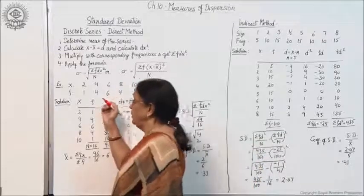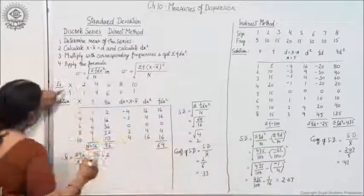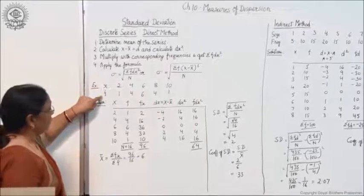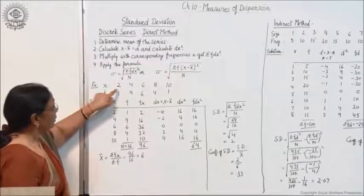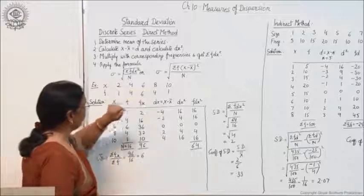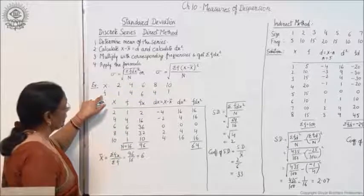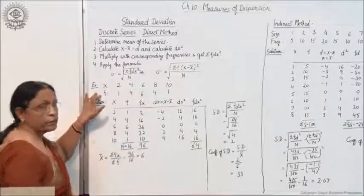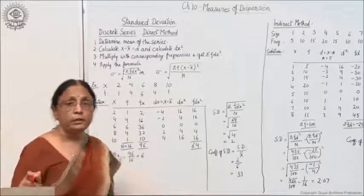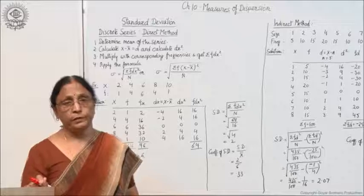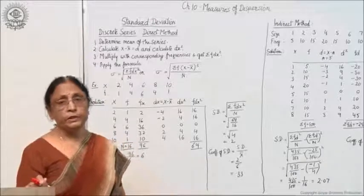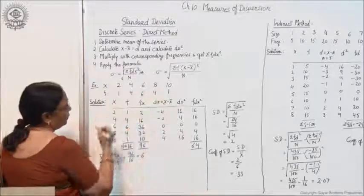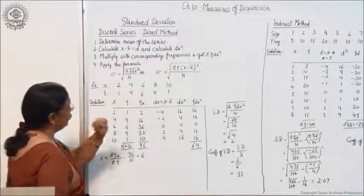Now we will take an example. The data given is x and f. The x column is 2, 4, 6, 8, 10 and the frequency f is 1, 4, 6, 4, 1. Frequency is given because this is the case of discrete series, in which frequencies are always given.